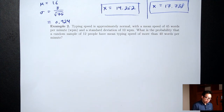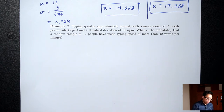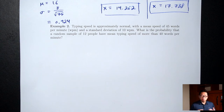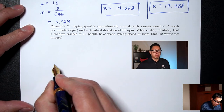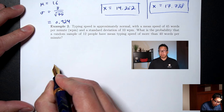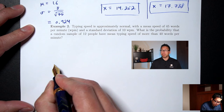Example 2: typing speed is approximately normal with a mean of 45 words per minute and a standard deviation of 10 words per minute. What is the probability that a random sample of 12 people have a mean typing speed of more than 40 words per minute? First, draw the normal distribution picture with the mean in the middle. We're picking 12 people, which is less than 30 — but we're told typing speeds are approximately normal, so we're allowed to use the normal distribution.